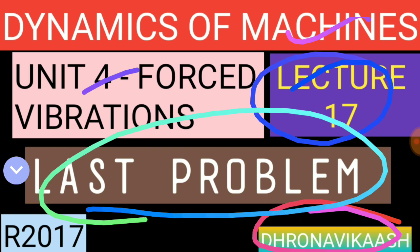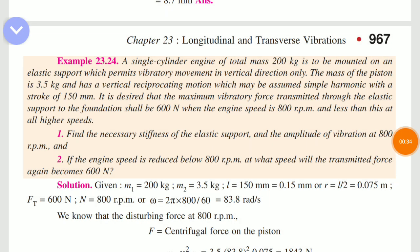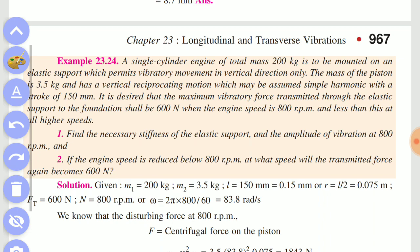Unit 4 is complete. This is the last problem. A single cylinder engine of total mass M is mounted on an elastic support which permits vibratory motion in the vertical direction only. The mass of the piston M1 is 3.5 kg. It has a vertical reciprocating motion which may be assumed as simple harmonic motion, with a stroke of 150 mm — stroke is capital L.